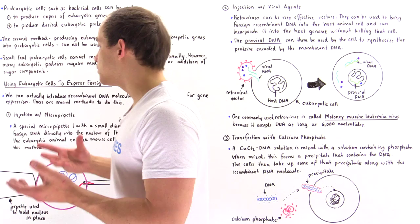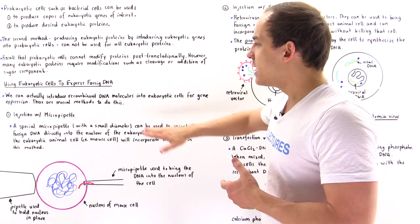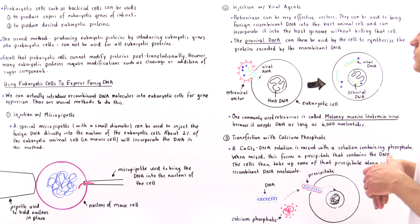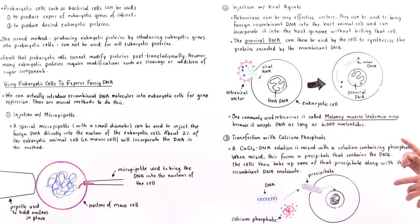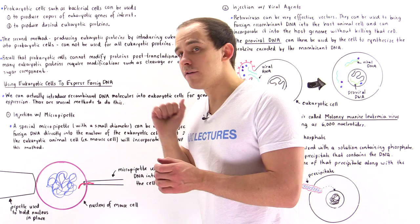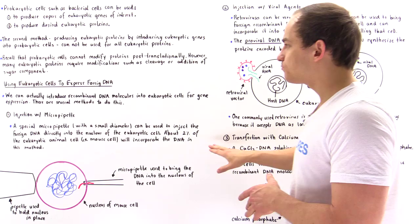These genes can basically be used to express and produce different types of proteins. There are three methods we normally use to inject a certain gene into a eukaryotic cell. Method number one is injection with a micropipette. Method number two is injection with a viral agent, specifically a retrovirus. Method number three is transfection with calcium phosphate. Transfection simply means the introduction of that DNA molecule into a eukaryotic cell without using any viral agent.